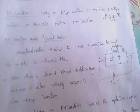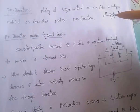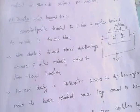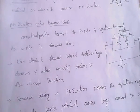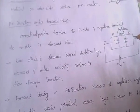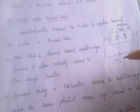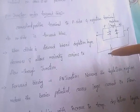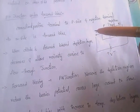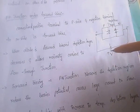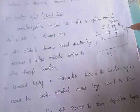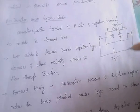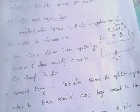PN junction diode operates in two biases: forward bias and reverse bias. Under forward bias, the positive terminal of the battery is connected to the P-type terminal and the negative terminal of the battery is connected to the N-type terminal.